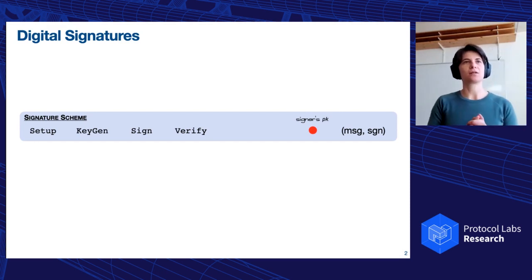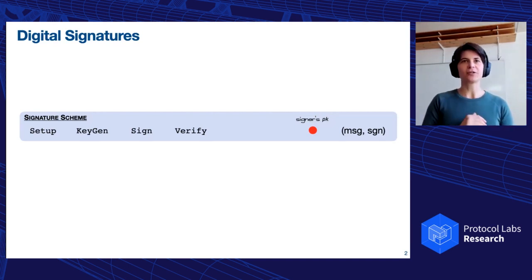So to get everybody on the same page, let's see what digital signatures are. Just a quick recap. This is a cryptographic primitive that usually involves four algorithms. We have a setup algorithm that outputs, for instance, the group we are working with or some generic settings, public parameters. We have a key generation algorithm that will output a pair, a secret signing key and a public key, a sign algorithm that's used together with the secret key and a message to produce a signature, and a verification algorithm, verify, that takes instead the signer's public key that throughout this presentation I will represent like this colorful circle, and checks that the signature is actually correct for the given message and the given public key.